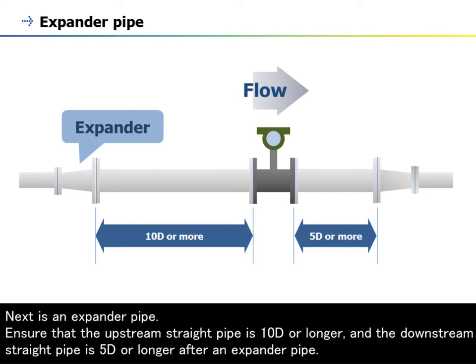Next is an expander pipe. Ensure that the upstream straight pipe is 10D or longer, and the downstream straight pipe is 5D or longer after an expander pipe.